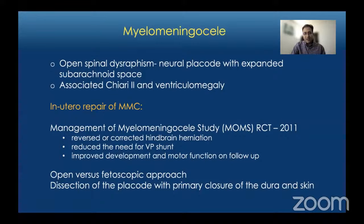Currently in utero repair can be done by either an open approach or a fetoscopic approach. The repair involves dissection of the neural placode with primary closure of the dura and the skin.